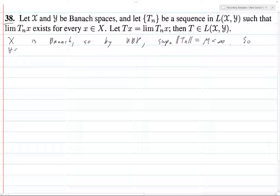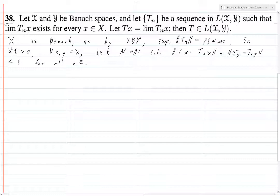So then for all epsilon greater than 0, for all x and y in X, let n be a natural number such that norm tx minus tnx plus norm ty minus tny is less than epsilon for all n greater than or equal to N.